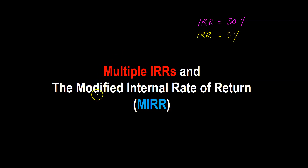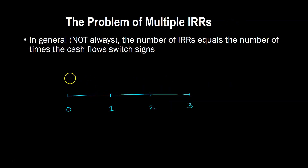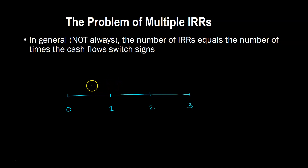Fortunately, there's a calculation called the modified internal rate of return which can be done to resolve this multiple IRR problem. Before we get into this calculation, recall that a project will have multiple IRRs if the cash flows of the investment are switching signs multiple times.